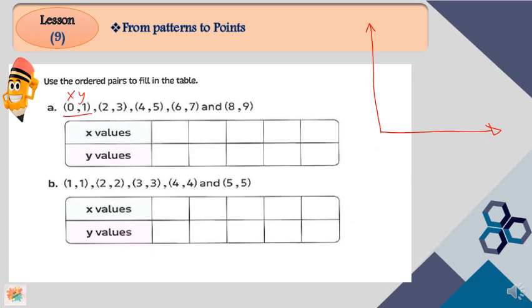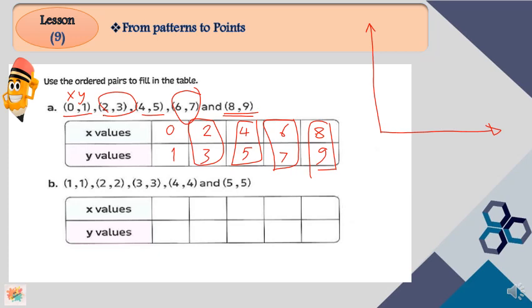So if we write zero here, we write one here. Next, if here is two, then here is three. Next, if here is four, then here is five. Here six, here seven, here eight, here nine. I got the numbers eight and nine from here, and six and seven from the second ordered pair, and four and five from here, and two and three from the ordered pair.